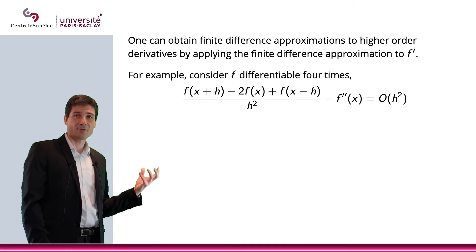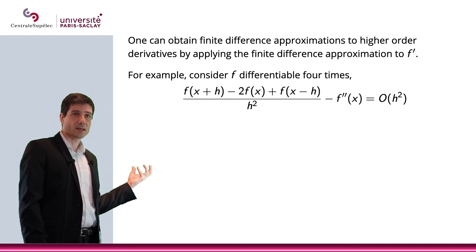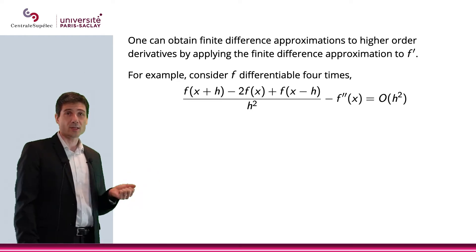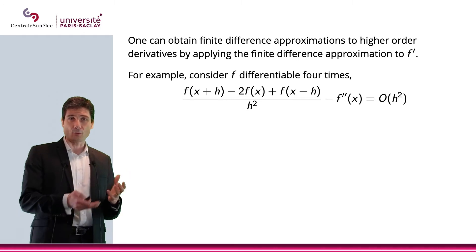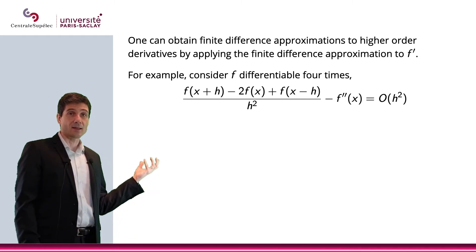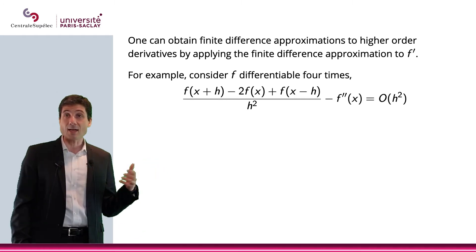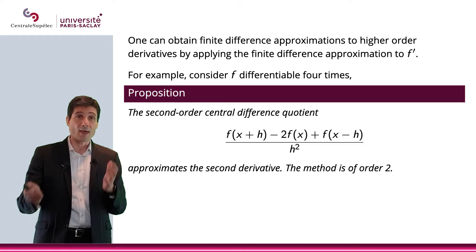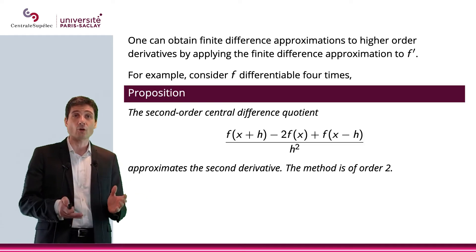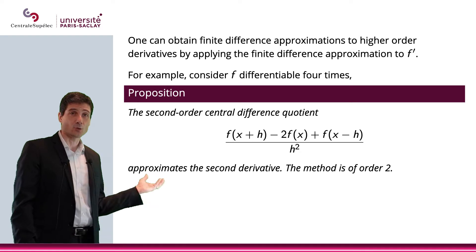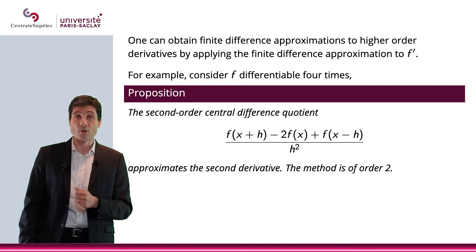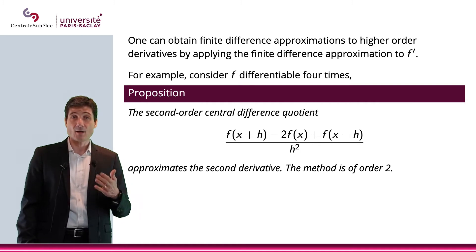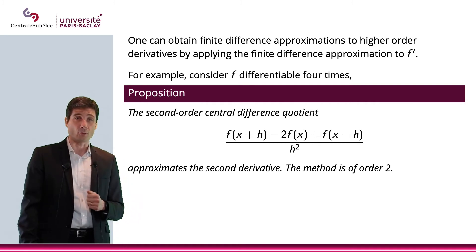this way: you have this difference between what looks like what we found earlier, which is the approximation using the values of x on the grid, and the second derivative, and this is actually of order two. What we have is that the second-order central difference quotient—this is what we're going to call this approximation—will approximate the second derivative, and the method is of order two.